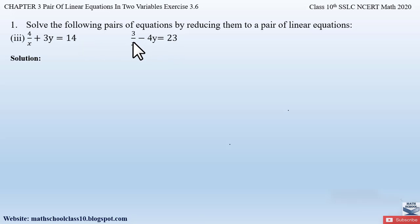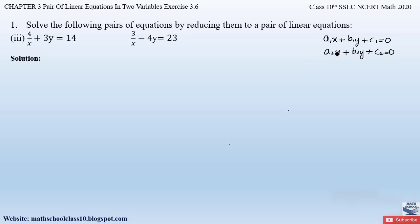We have to first reduce them into the standard form of a pair of linear equations and then solve them to find their solution. The standard form is given by a₁x + b₁y + c₁ = 0 and a₂x + b₂y + c₂ = 0. Here the variables x and y should be in the numerator, whereas in the given equations the variable x is in the denominator, so we need to fix that.